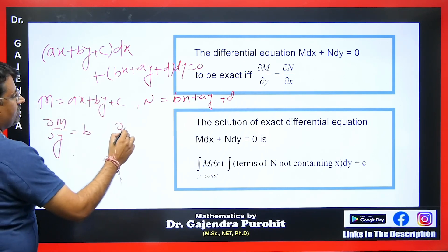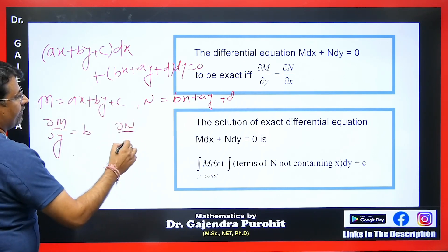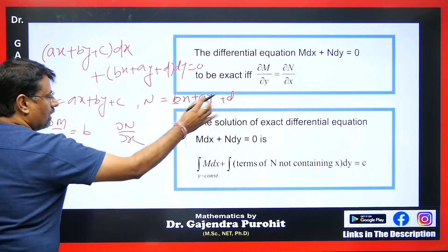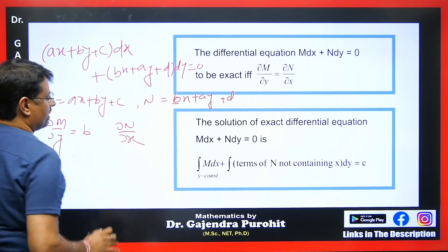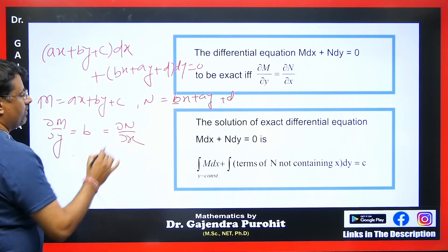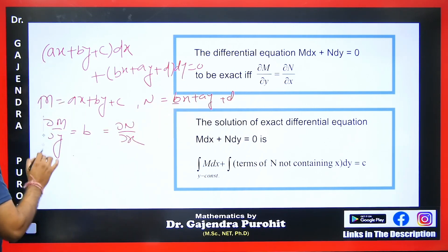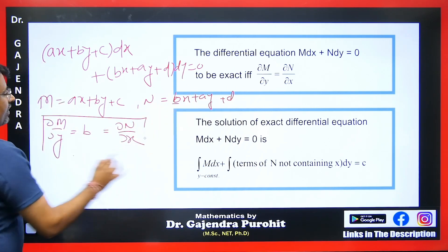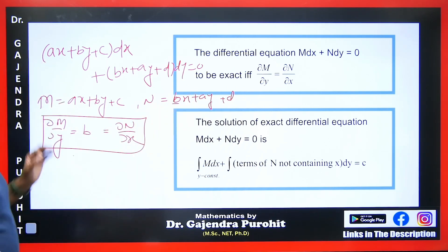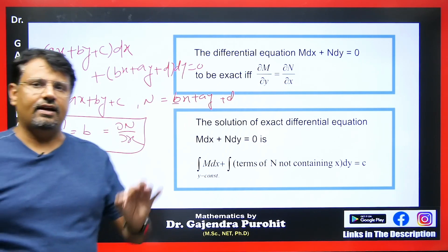Similarly, we differentiate N with respect to x. The constant terms become 0 and we get b here as well. This means that the differential equation we have is exact.